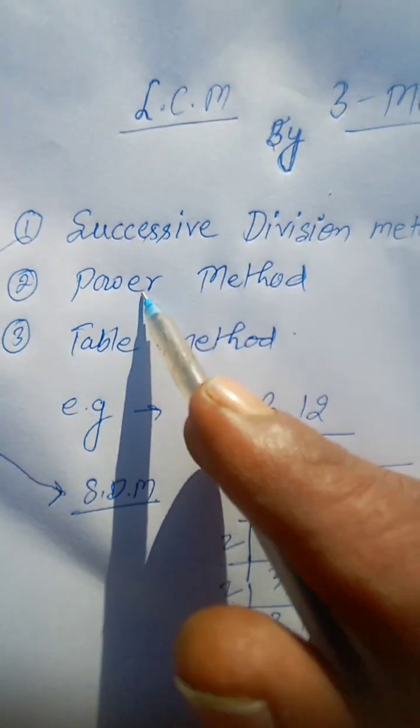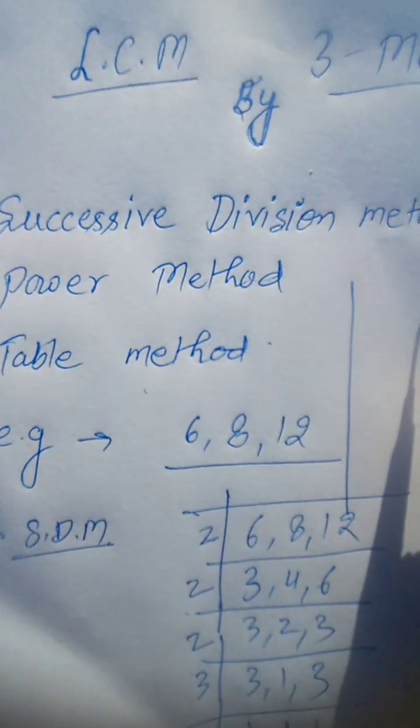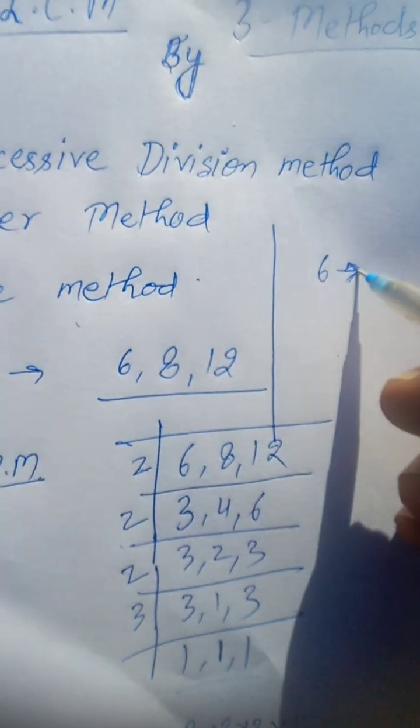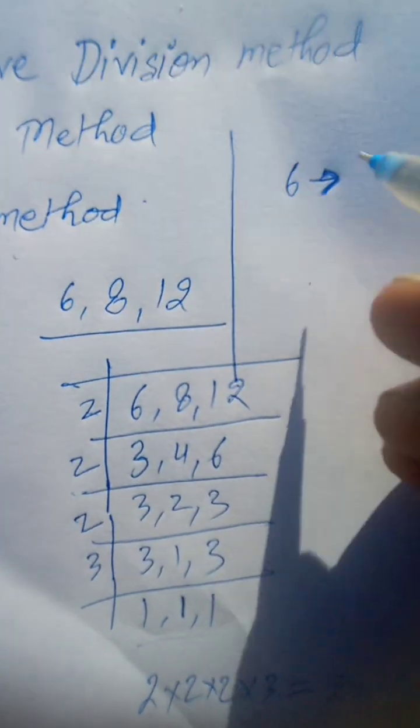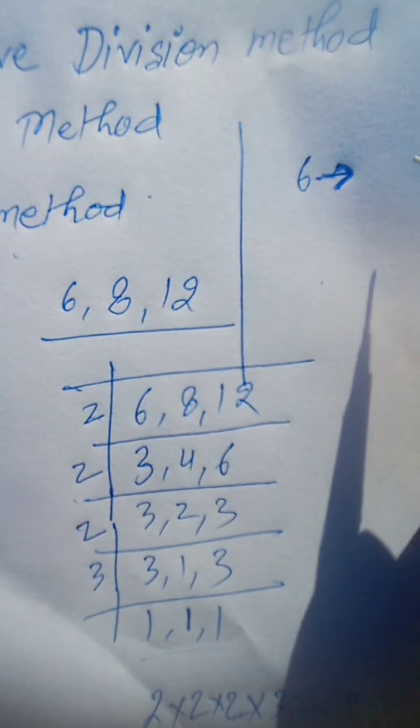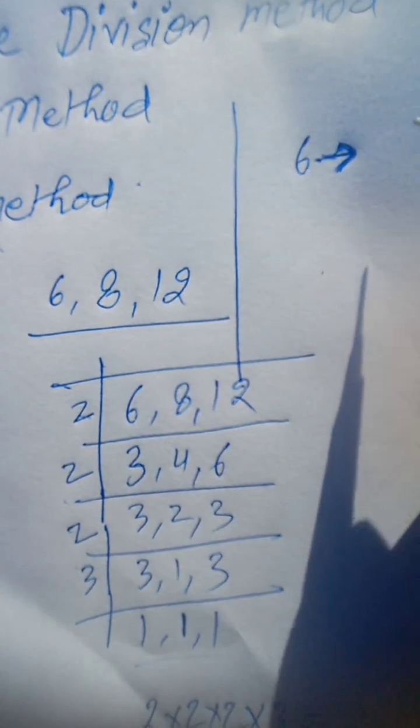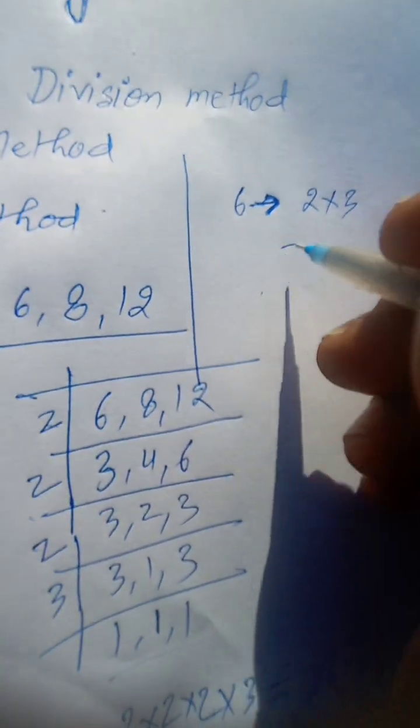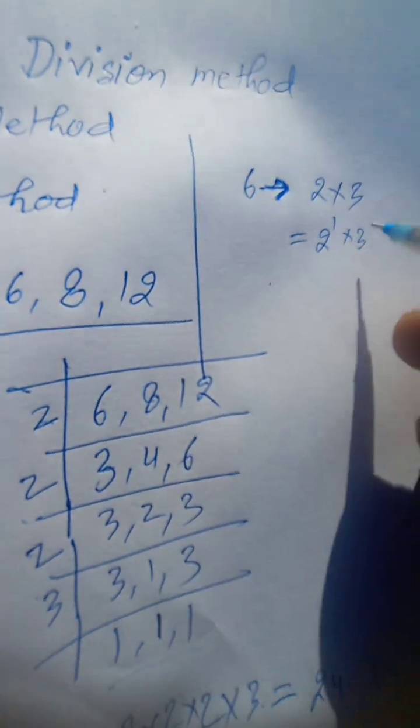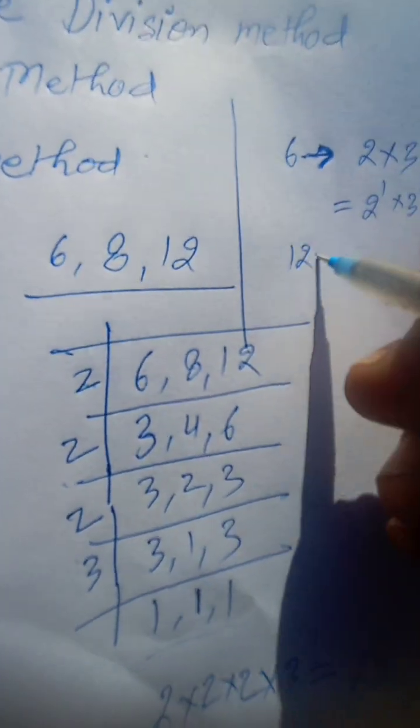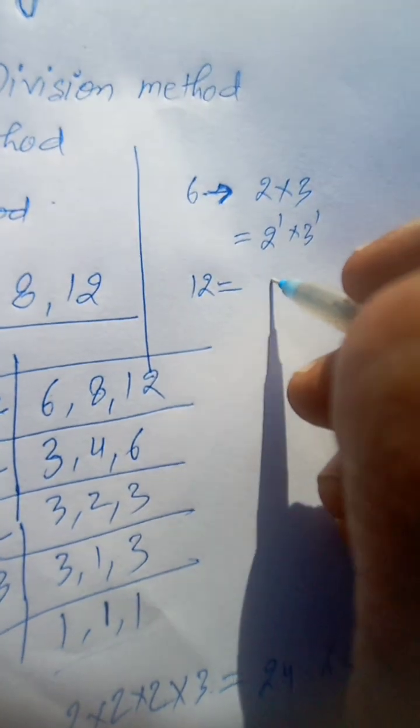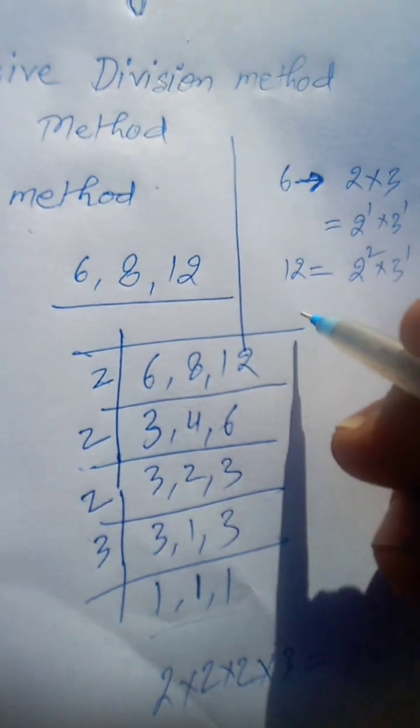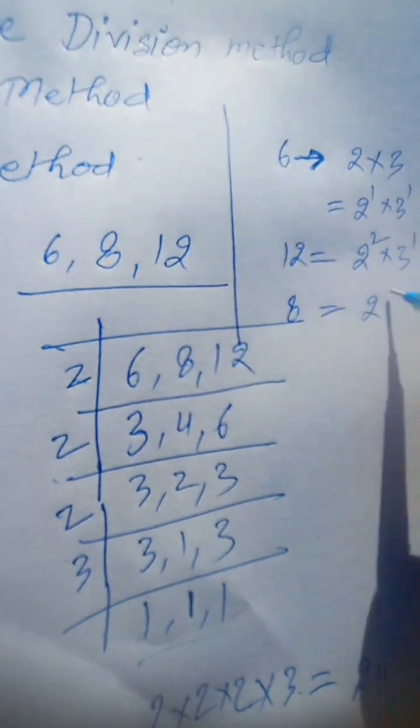In power method, first of all every number is taken as factors of prime numbers. That is fundamental theorem of arithmetic. 6 can be written as 2 × 3, means 2 to the power 1 and 3 to the power 1. Similarly, 12 can be written as 2 to the power 2 and 3 to the power 1, and 8 can be written as 2 to the power 3.